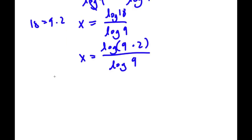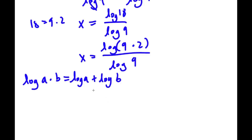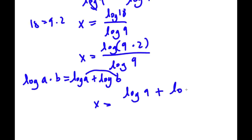Now if I have a logarithm in the form log a times b, this is actually equal to log a plus log b. Because when you're adding logarithms, you're technically just multiplying the two numbers in front of the logarithms. So now log 9 times 2 is going to equal log 9 plus log 2.